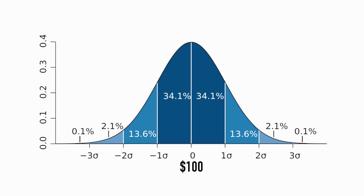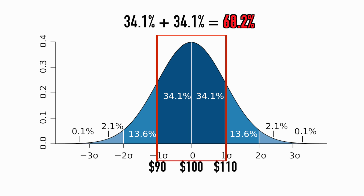If the $100 stock is in the middle — meaning the current stock price — and we're expecting a 10% move up or down, whether it goes to $90 or $110, we know it's going to stay within that range with 68% certainty. That's a one standard deviation move, and that's why we say it encompasses 68% of the data.